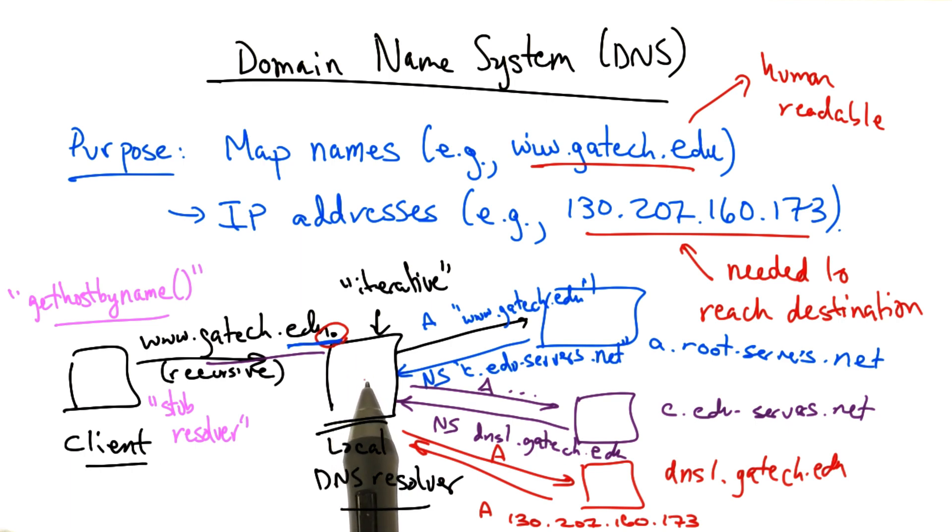A particular DNS query might thus require round trips to multiple servers that are authoritative for different parts of the hierarchy. The blue server is authoritative for the root, the purple server is authoritative for .edu, and the red server is authoritative for gatech.edu.